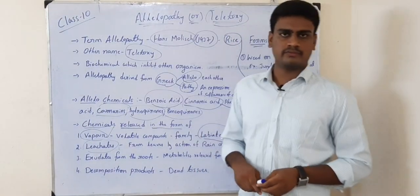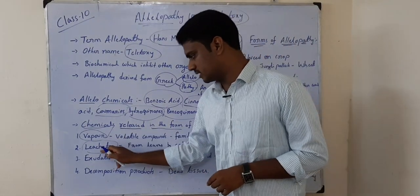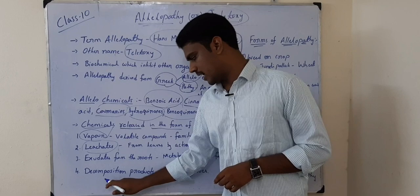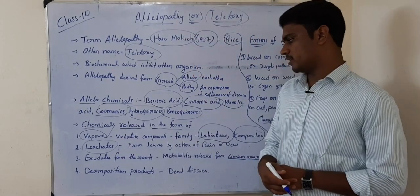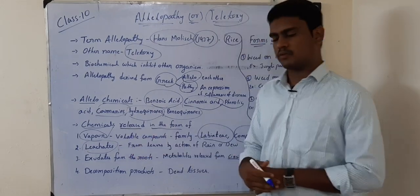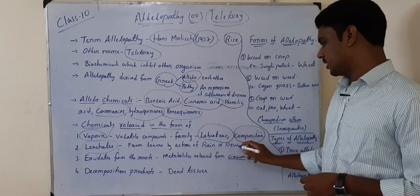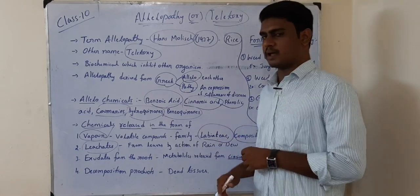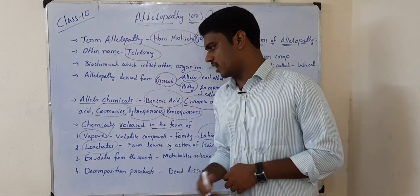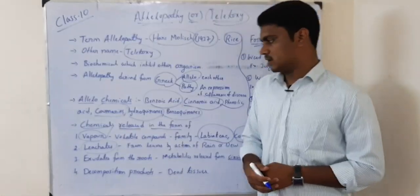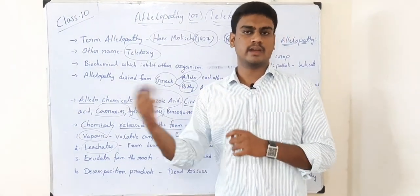Let us see what forms these chemicals are released in. The first one is vapor, the second is leachers, the third is exudates, and the last one is decomposition products. Vapor is released in the form of volatile compounds, especially from the families Labiatae and Compositae. Plants belonging to these two families exhibit allelochemicals in the form of vapor from the leaf, which can then affect other plants.